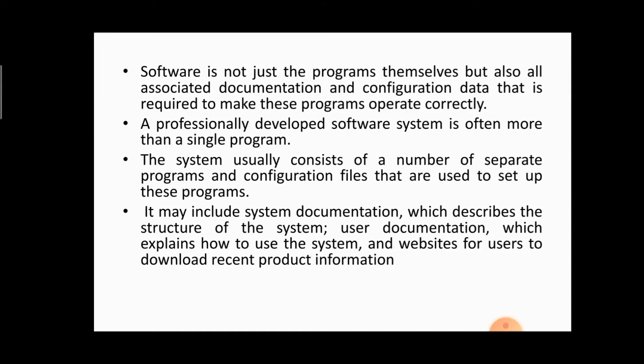Documentation means a user manual. Once you develop the software, you have to develop the user manual also, because the user wants to know about the software. Configuration data means you have to tell the user on which configuration they can use your software — for example, what will be the RAM (4GB or 6GB) and what will be the hard disk capacity (500GB or 1TB). All those things should be known to the user to operate your software correctly.